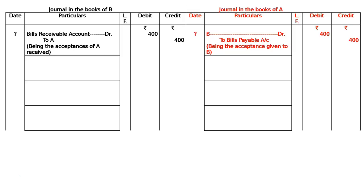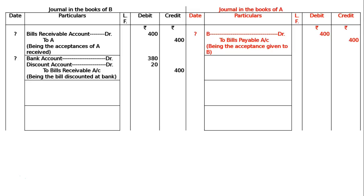After getting the bill, B discounted it at Rs.380 at the bank. Bank account is debited Rs.380 — debit the receiver. Discount account is debited Rs.20 — debit the expenses and losses, this being the expenditure of B — to Bills Receivable account Rs.400. Being the bill discounted at bank.